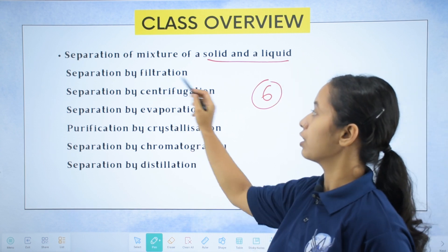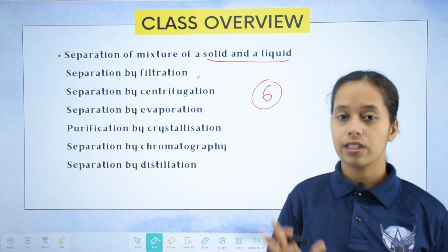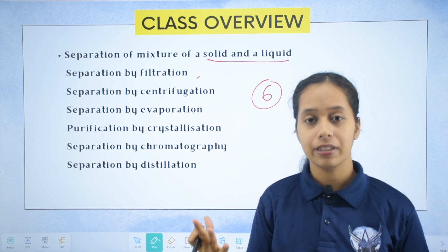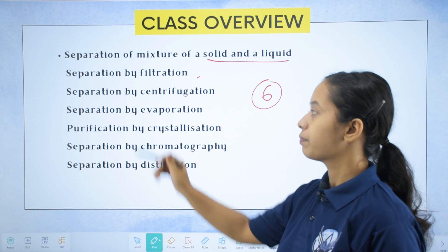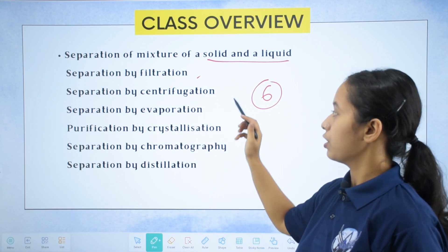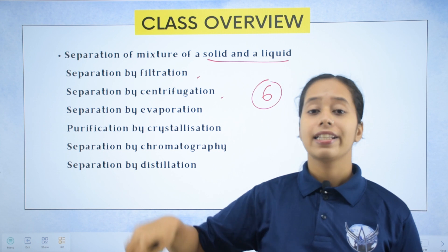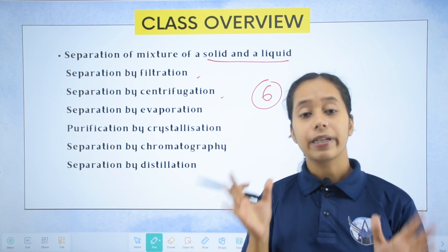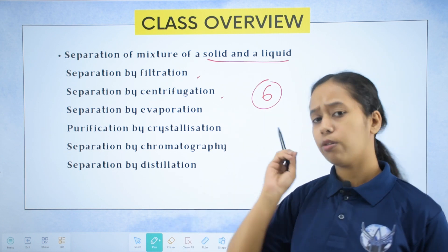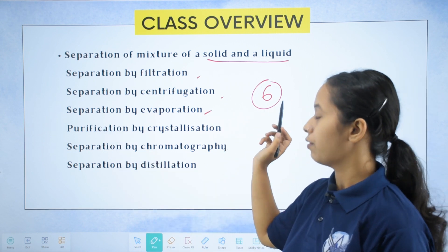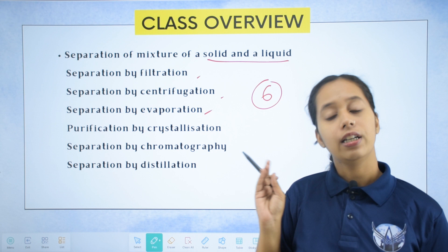The 6 methods are: Number 1 - separation by filtration. We use a filter paper to filter substances. Number 2 - separation by centrifugation. In centrifugation, there is a machine, and basically the mixture is rotated at a high speed. Number 3 - separation by evaporation, where heating causes the liquid to evaporate.